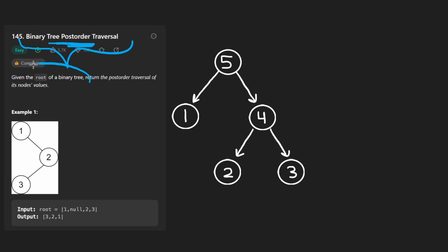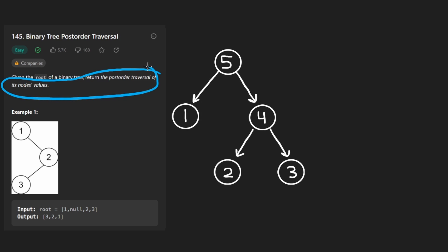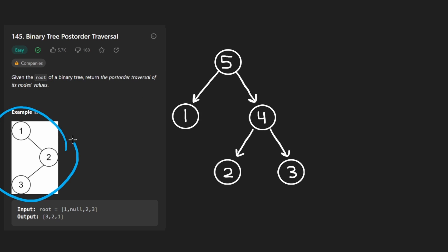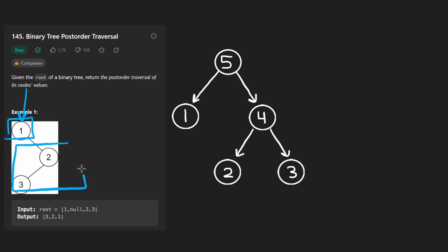We're given the root of a binary tree and we want to return the post-order traversal of all of its values. Post-order traversal means we start at the root, go through the entire left subtree — which in this case is empty — and then we go through the entire right subtree recursively.